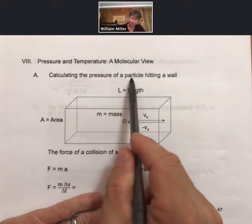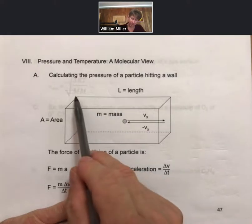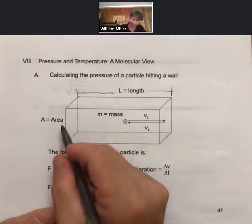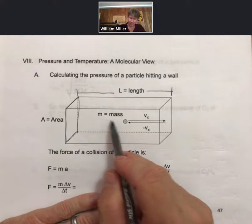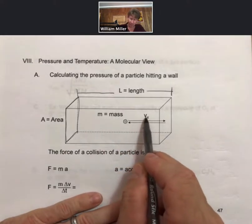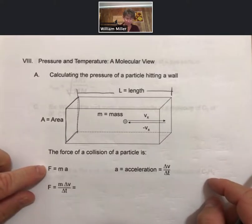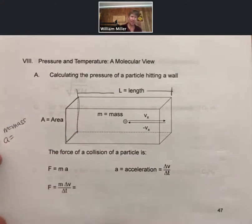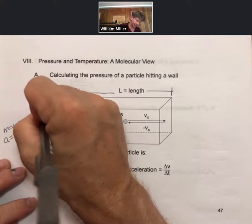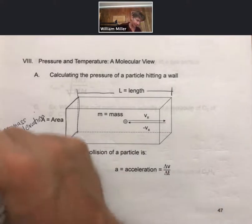To do that, we're going to calculate the pressure of a particle hitting a wall. We'll do it for one particle in a box. The box has a length L, it has area A on this end, and we have one particle with mass m, and that particle is moving in the x direction with a velocity v sub x. Now the force of a collision of a particle, or anything, force equals m times a, that's mass times acceleration. So m equals mass, a equals acceleration, and if you've taken a physics class, then you know that acceleration is change in velocity over change in time, where v is velocity and t is time. The capital Greek letter delta means change.